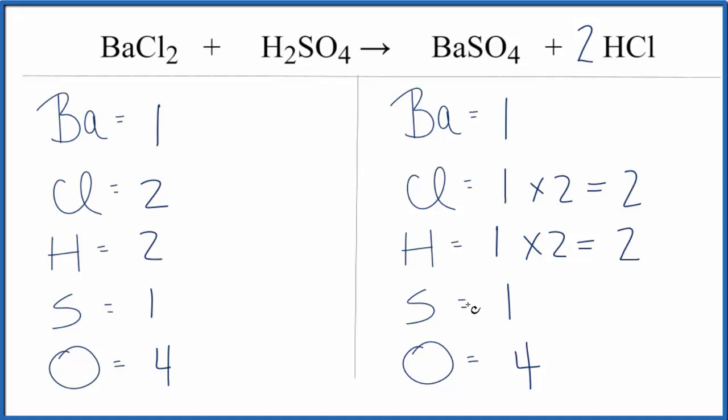And we're done. This is Dr. B with the balanced equation for barium chloride plus sulfuric acid gives us barium sulfate and hydrochloric acid. Thanks for watching.